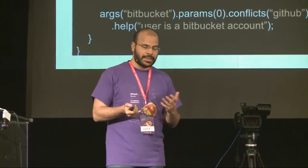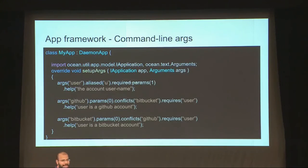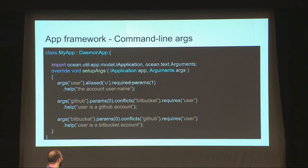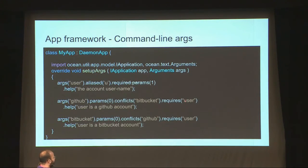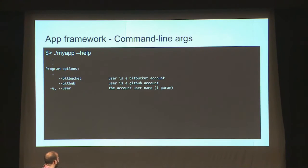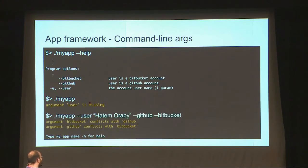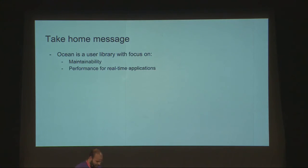The command line argument parsing is pretty cool — a bit different than getops in D2 but achieves the same thing, and also comes from Tango. You can declare a parameter called user, give it a short name, mark it as required, and give it help text. Another parameter like GitHub account and Bitbucket has params equal to zero, meaning it's Boolean. You say GitHub conflicts with Bitbucket and Bitbucket conflicts with GitHub, and both must be provided with user. Running my app help shows the user, GitHub, and Bitbucket options. If you provide GitHub and Bitbucket together, it complains about the conflict.